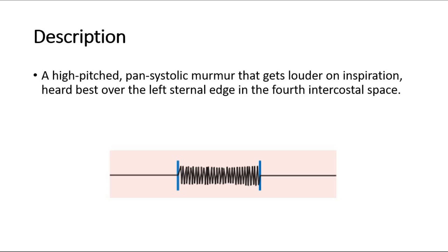In this picture, the two blue lines depict the first and second heart sounds, showing the murmur is throughout the systolic phase.